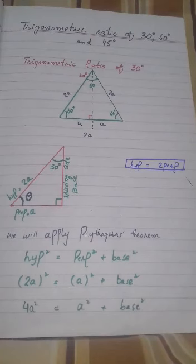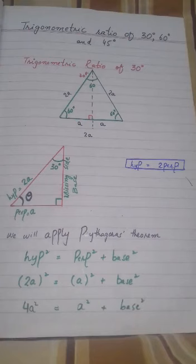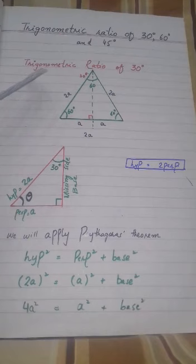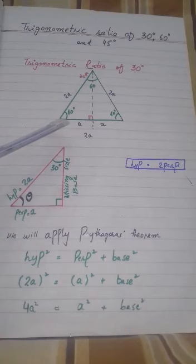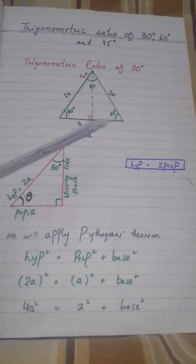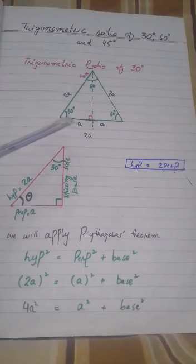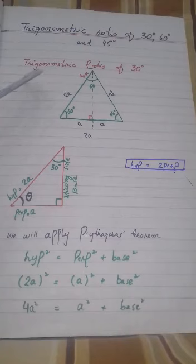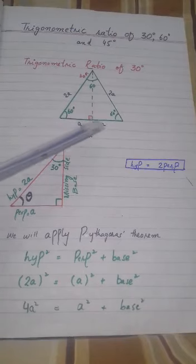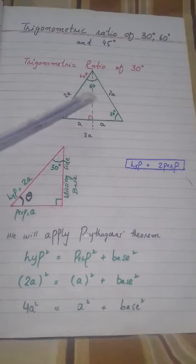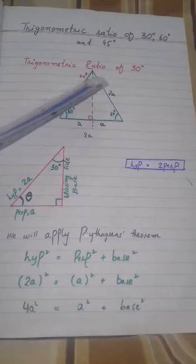Now we will find the trigonometric ratios of 30, 60, and 45 degrees. First we will find the trigonometric ratios of 30 degrees. For this, we first draw an equilateral triangle — a triangle in which all three sides and all three angles are equal. To get a right angle triangle, we bisect this equilateral triangle, which divides the 60-degree angle into two angles of 30 and 30 degrees.